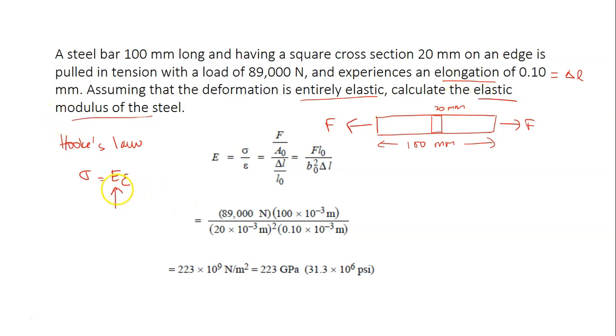So you need to calculate the Young modulus. Rearranging the Hooke's Law, you will get E equals to stress over strain. And stress, you can represent it with F over A₀. And strain, represent it with delta L over L₀. And rearrange this, you will get this.